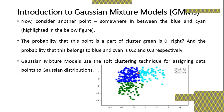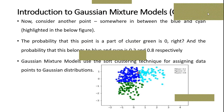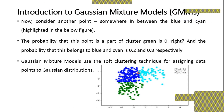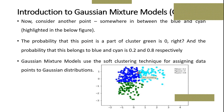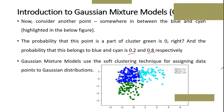Now consider another point somewhere in between the blue and cyan clusters — this point at the border of blue and cyan colored dots. The probability that this point is part of the green cluster is 0, obviously because it is very far from the green cluster. The probability that it belongs to the blue cluster is 0.2 and to the cyan cluster is 0.8, because this point is much nearer to the cyan color compared to the blue color.